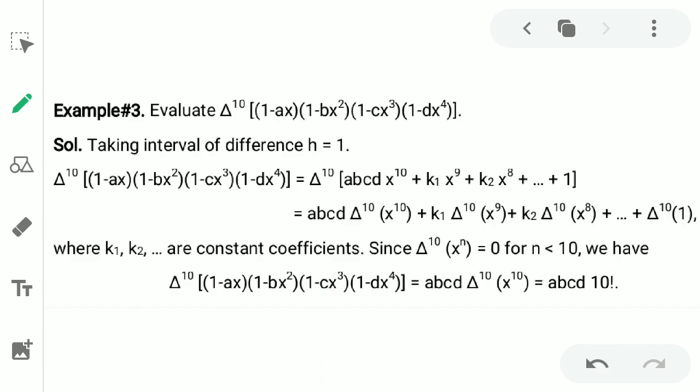First of all I will be taking the interval which is h that is equals to 1. Now we know that if you want to calculate delta raise to power 10 that means the coefficients are multiplied.